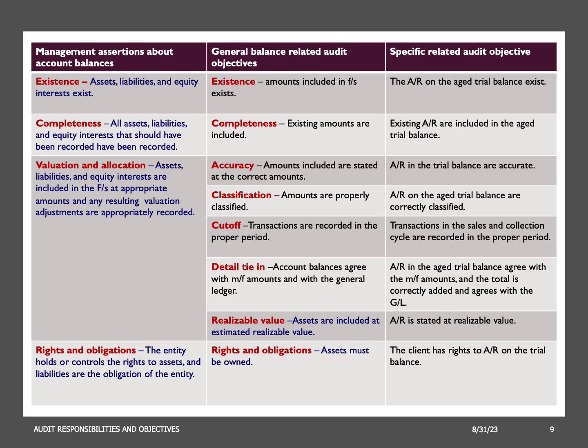Valuation and allocation pertains to the accuracy of the amounts assigned to assets, liabilities, revenues, and expenses in the financial statements. It asserts that these values are fairly presented, appropriately calculated, and in line with accounting standards. The auditor's objective is to gather audit evidence supporting that the monetary values assigned are accurate, reasonable, and in accordance with applicable accounting standards. For example, for the accounts receivable account, the valuation and allocation assertion involves ensuring that the recorded balances accurately reflect the estimated collectible amounts — the net realizable value of accounts receivable.